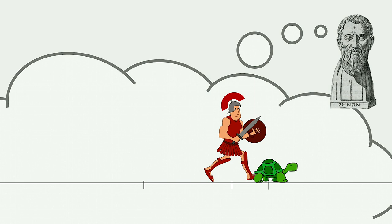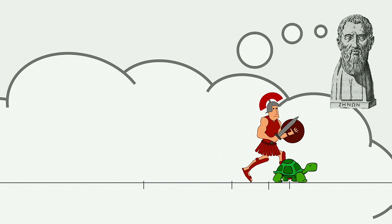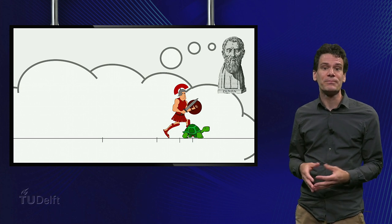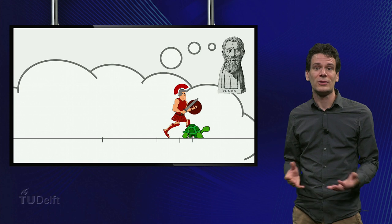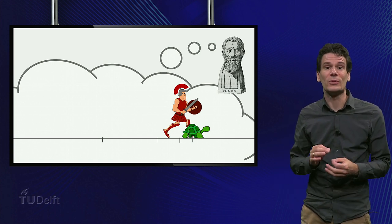Achilles has to run this distance as well to catch up with the tortoise, but again the tortoise will have moved. And so on. Since this process goes on indefinitely, Zeno argues that Achilles will never catch up with the tortoise. The distance between them will become smaller and smaller, but Achilles will not win the race.